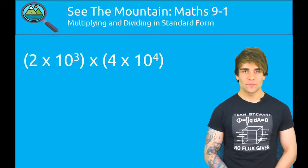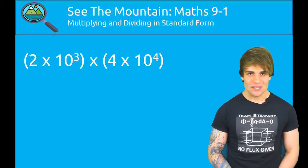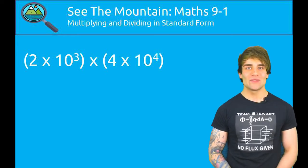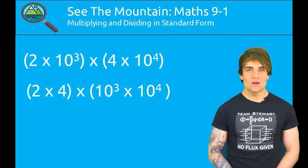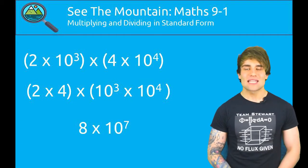Now let's try multiplying them. To my right you can see 2 times 10 to the 3 multiplied by 4 times 10 to the 4. Nice and easy, the first step is simply multiplying 4 by 2. That gives us 8. And then we can simply add the powers, 3 and 4, for a final answer of 8 times 10 to the 7.